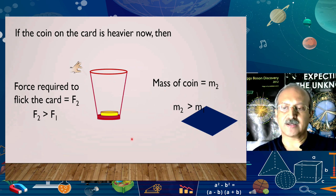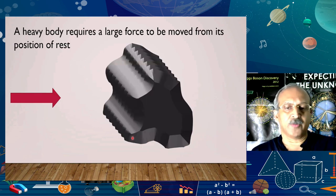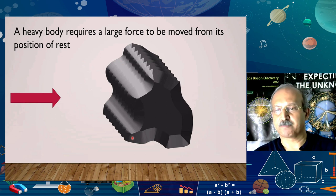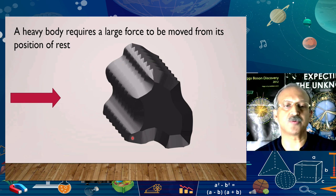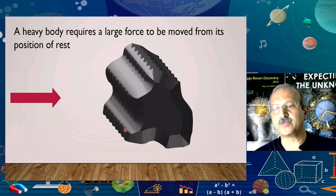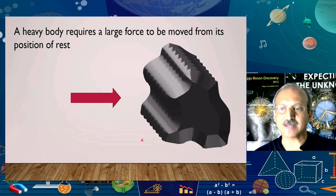Keep this idea in mind. We will look at a few more animations and experiments and then make some conclusions. We have a massive body here, like a boulder. Imagine you are very strong and could move this. A large force would be required to move this heavy body from its position. So there is a heavy body, a large force is required, and even when it moves, it moves with very small acceleration.